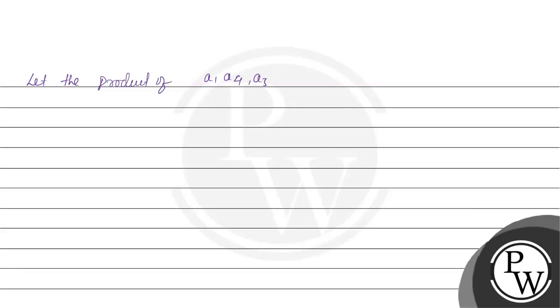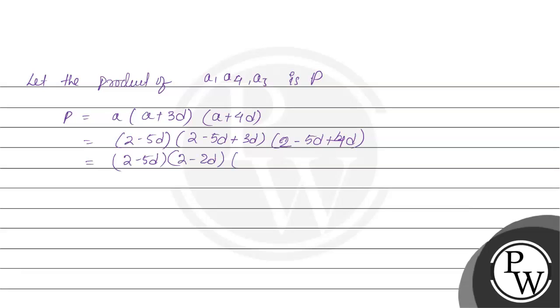Let the product of A1, A4, and A5 be P. We can write P equals A multiplied with A plus 3D multiplied with A plus 4D. If we solve all the brackets, then what we have is 2 minus 5D multiplied by 2 minus 2D multiplied by 2 minus D. Taking 2 common from here, we have 2 multiplied with 1 minus D multiplied with 2 minus 5D multiplied with 2 minus D.